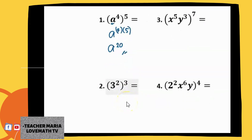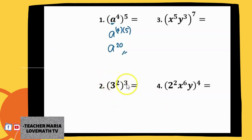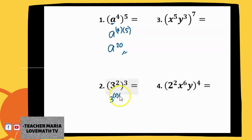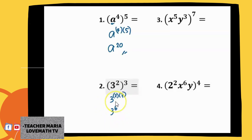Now, what if we have 3 raised to 2, raised to 3? As you can see here, the base is not a letter, so we are going to evaluate this later. We have 3 raised to 2 raised to 3 — leave the base 3, multiply the exponents: 2 times 3 is 6. So you will have 3 raised to 6, but we can simplify this.